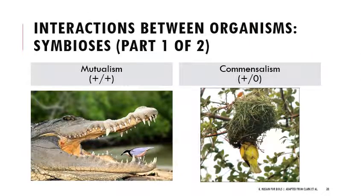Symbioses tend to be longer-lived than predation and herbivory, which end in death. One positive symbiosis is mutualism, where both individuals benefit. For example, in one image, a crocodile or alligator is having its teeth cleaned by a bird — the reptile benefits from having parasites removed, and it doesn't eat the bird because that cleaning is beneficial to it, while the bird gets food in return.